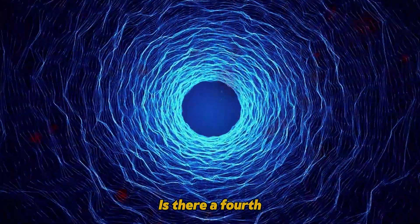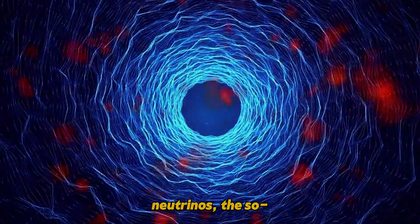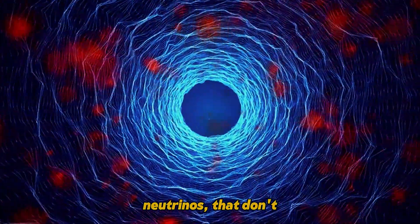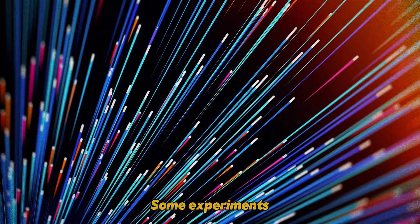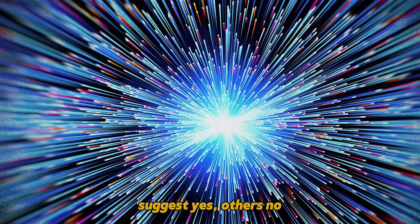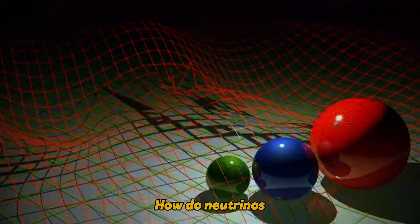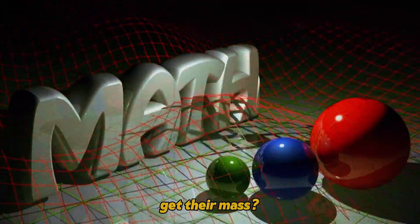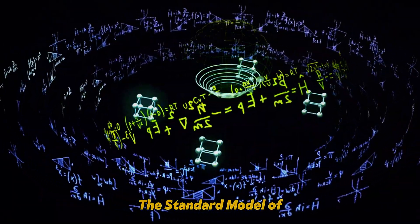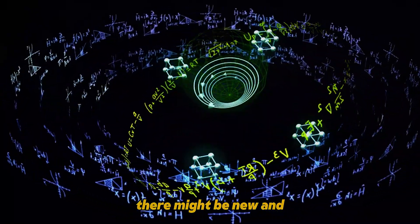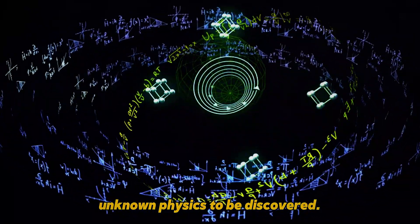Is there a fourth generation of neutrinos, the so-called sterile neutrinos, that don't interact even through the weak force? Some experiments suggest yes, others no. It's a mystery that remains unsolved. How do neutrinos get their mass? The standard model of particle physics can't fully explain this phenomenon, suggesting there might be new and unknown physics to be discovered.